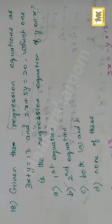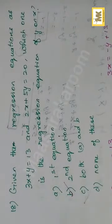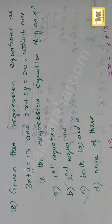Given the regression equations: 3x plus y is equal to 13, and 2x plus 5y is equal to 20. Which one is the regression equation of y on x, and which is the regression equation of x on y?